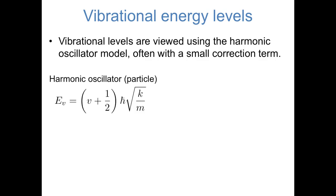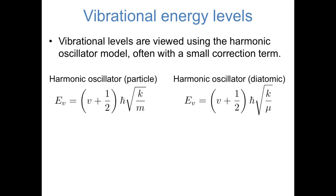Now we can actually think about at what energies we expect to find these peaks. Let's think first about the vibrational part of these transitions. Quantized vibrational energy levels are most simply represented by the harmonic oscillator model. In the harmonic oscillator model, a mass m on a spring with constant k has energy levels V plus 1/2 times h-bar times the square root of k over m. For a vibrating diatomic molecule, the harmonic oscillator model tells us basically the same thing, where the only difference is that rather than mass m, we have a reduced mass mu. The bottom line is that the energies are equal to a quantum number V plus 1/2 times a collection of constants.